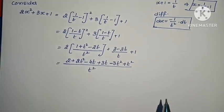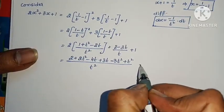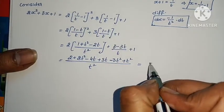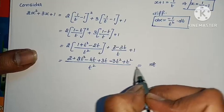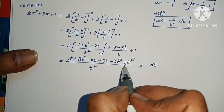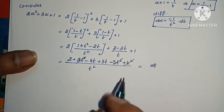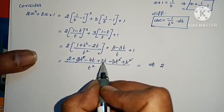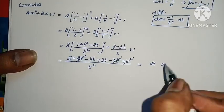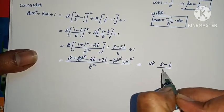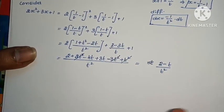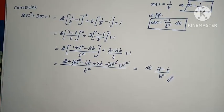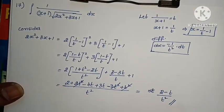Multiplying through by t squared in the denominator and collecting terms: 3t squared and 2t squared combine, minus t squared terms cancel, and after simplification we get 2 minus t by t squared.